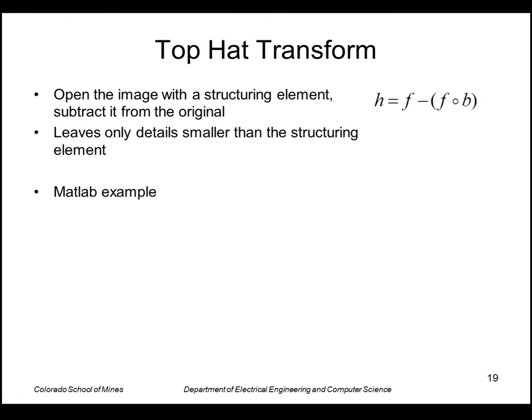One final algorithm I'd like to look at is the top hat transform, which is defined as opening the image and then subtracting it from the original. So this leaves details only details that are smaller than the structuring element. So there's a nice example in MATLAB that I'll show here in a second. First, though, just to see why this works.